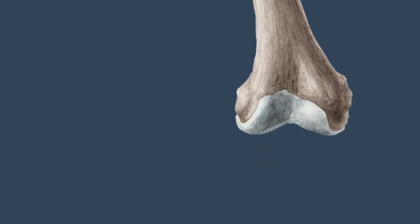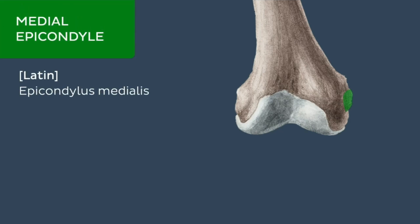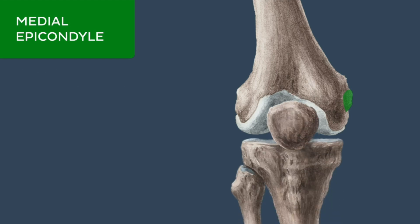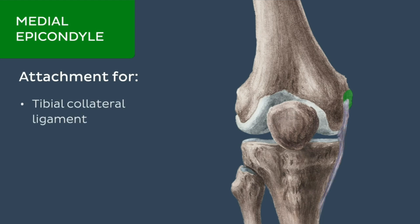Distal to the adductor tubercle is a rough eminence on the medial aspect of the medial condyle of the femur known as the medial epicondyle. The medial epicondyle of the femur provides the attachment site for one of the ligaments of the knee joint, the tibial collateral ligament.